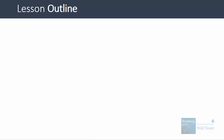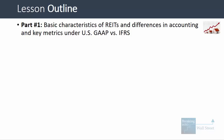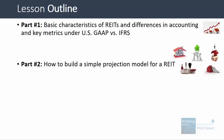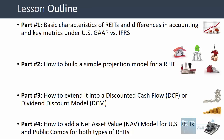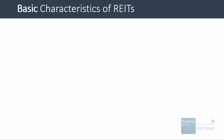In this lesson we'll cover four main points. First, the basic characteristics of REITs and how accounting differs under US GAAP versus IFRS. Then in part two, how to build a simple projection model for a REIT. Part three extends that into a discounted cash flow or dividend discount model. Part four adds a net asset value model — mostly relevant for US-based REITs — and shows public comps examples for both types. We're condensing several hours of course material into about 20 minutes.